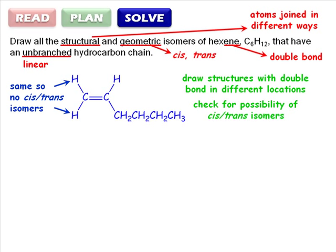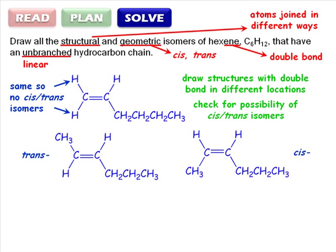Now let's move the double bond over one carbon atom. Both carbon atoms of the double bond have different groups attached, so cis-trans isomerism is possible. In this case, the carbon atoms that make up the longest chain are on opposite sides of the double bond, so this is the trans isomer. We can draw the cis isomer simply by swapping the position of the methyl group, here.